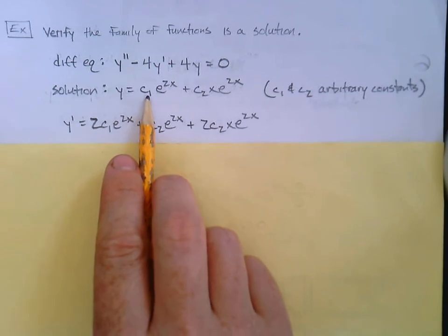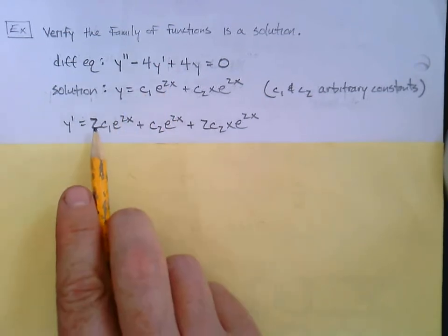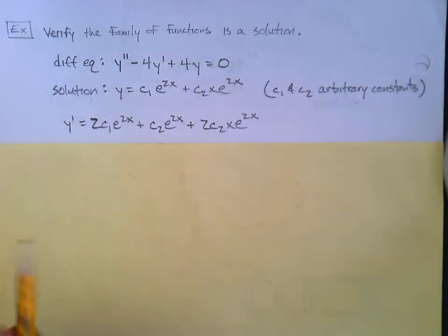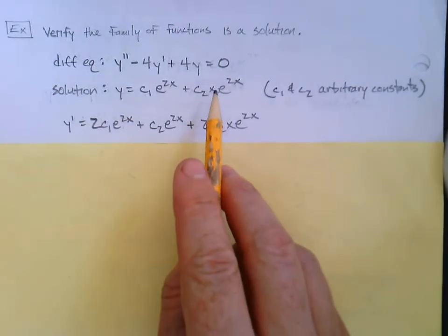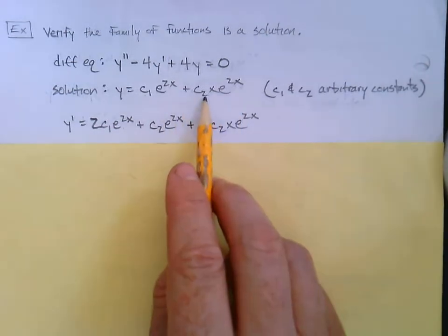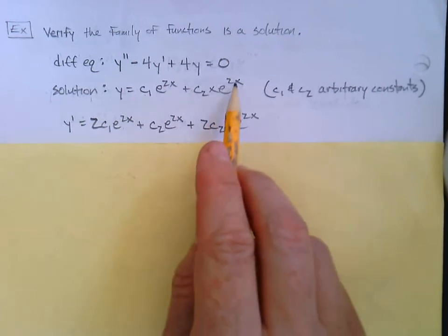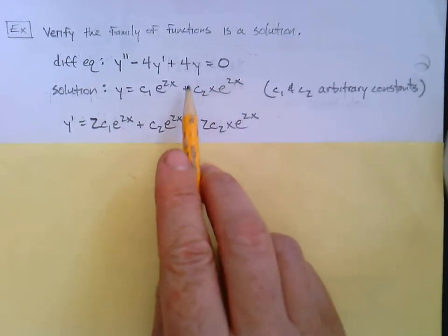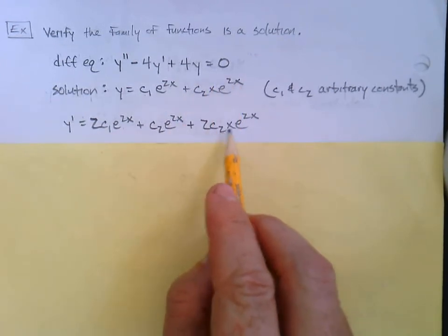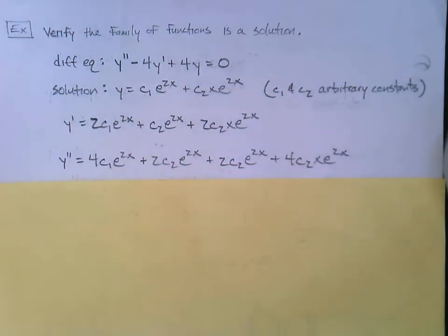If c1 is a constant, the derivative of c1 e to the 2x — we just bring that 2 down: 2 c1 e to the 2x. For the c2 x e to the 2x term, we have an x in that position, so this is a product rule: c2 e to the 2x plus 2 c2 x e to the 2x. That whole thing is y prime.